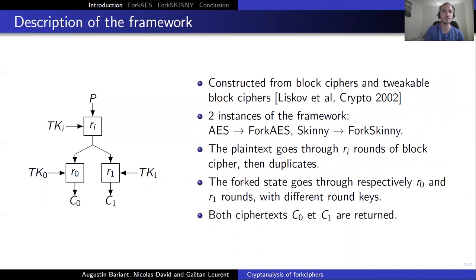They are constructed from block ciphers and tweakable block ciphers. There are two instances of this framework now: ForkAES derived from AES and ForkSkinny from Skinny.